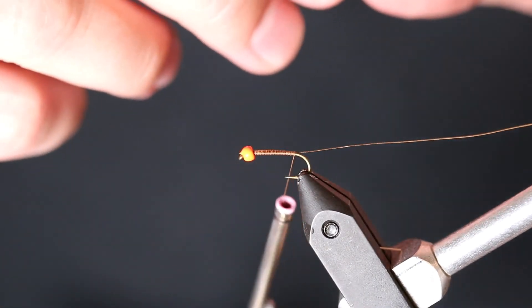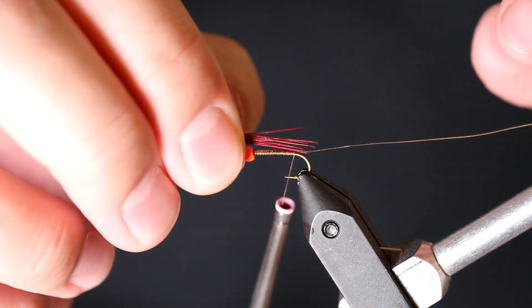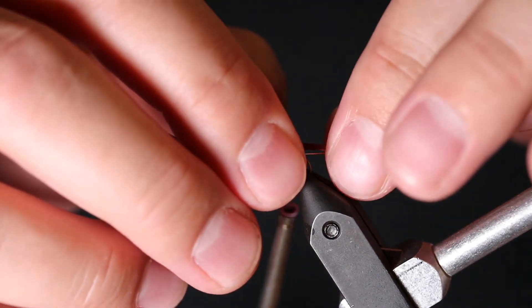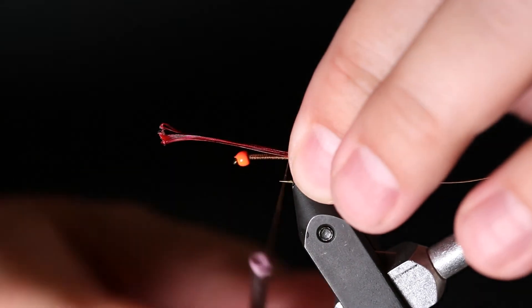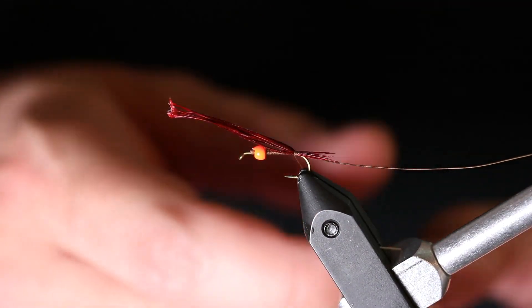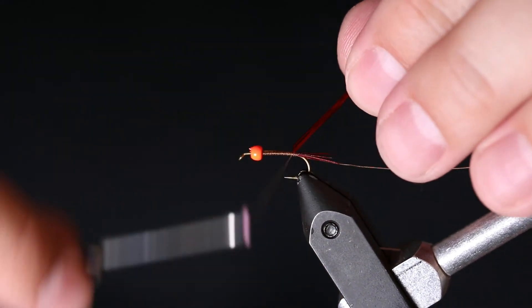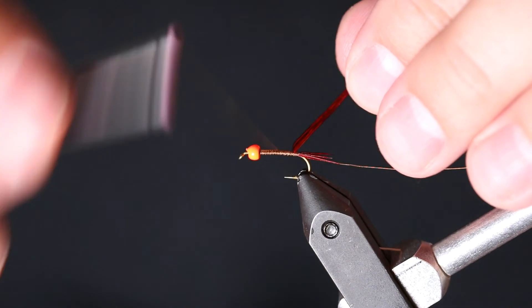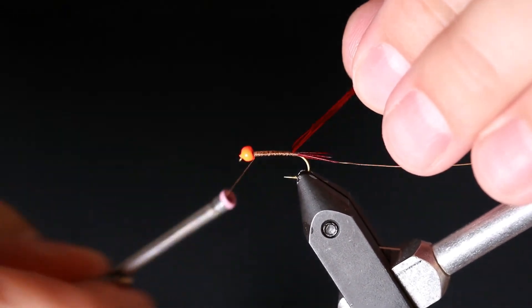Got a couple short ones in that group. Measure it out, you want it to be about half the length of the shank of the hook. Do a couple wraps to tie it in, and just work your thread back up the shank of the hook in front of your pheasant tail fibers.